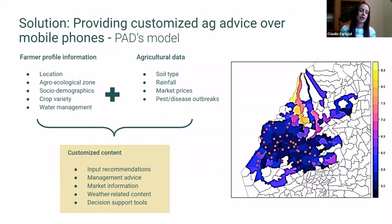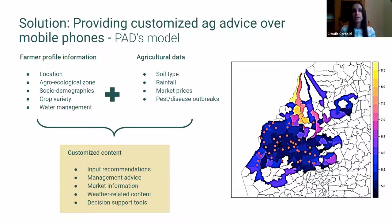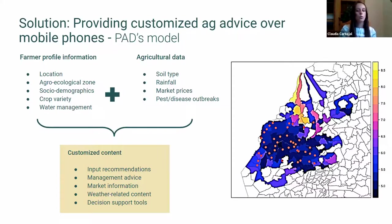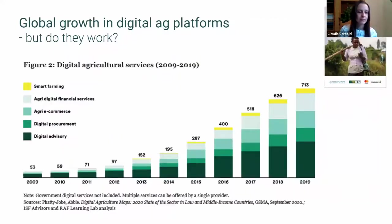We use both farmer-provided and public data to generate customized content covering crop management advice, input recommendations, and more. In the geographies where we work, feature phone penetration is very high but smartphone penetration is often very low. That's why PAD designs services based on feature phones like SMS or voice messages, while also having the capability to develop additional functionalities for smartphone users like WhatsApp, video, and photos. Digital solutions are growing rapidly.